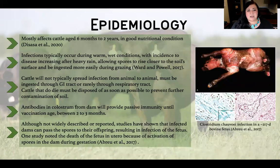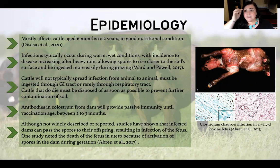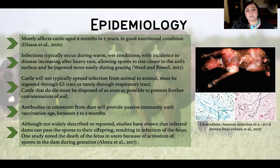A little bit about the epidemiology. There's really not a consensus as to why blackleg, for the most part, affects younger animals. But what we do see is animals from six months to about two years and in good nutritional standing are usually the ones affected. Infections typically occur during warm, wet conditions — the incidence of disease definitely increases because those spores are more likely to be ingested as they are coming back to the top of the soil profile. Cattle will not spread blackleg from animal to animal — it is not contagious. The only way they could get it from an animal is indirectly after that animal dies, if it is not disposed of correctly; the spores will leach out of that animal and back into the soil.